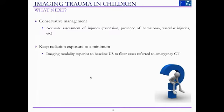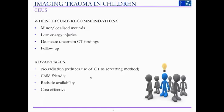There is a need for an imaging modality superior to baseline ultrasound that can filter cases which don't necessarily need a CT scan. More and more, the management of pediatric trauma is conservative — even more so than in adults — so you need a very accurate assessment of the injuries. That's where CEUS comes into the picture. EFSUMB has produced recommendations for the use of CEUS in the context of pediatric trauma, and new guidelines are coming out soon. It is recommended for use in minor or localized wounds in the context of low-energy injuries, to delineate uncertain findings and in follow-up.